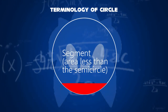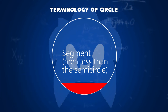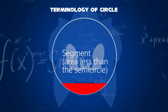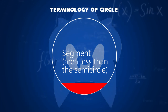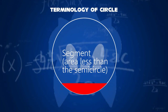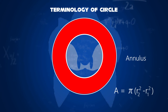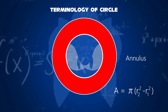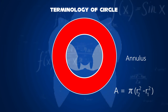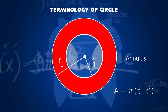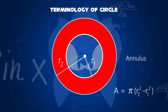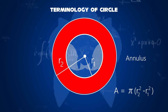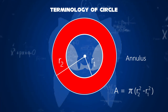Eleventh, one of the two possible arcs determined by the endpoints of a diameter, taking its midpoint as center — this is called a segment. That area can be less than its semicircle. Number twelve, a ring-shaped object — the region bounded by two concentric circles — is called an annulus. In an annulus, we take two radii r1 and r2. Thus the formula is π times (r2 squared minus r1 squared).